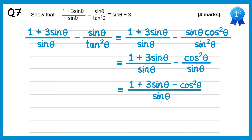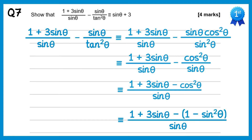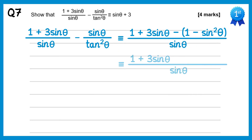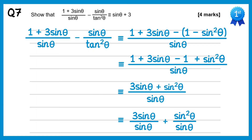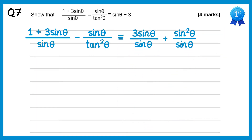Both denominators are now sinθ, so we combine into one fraction, then change cos²θ into 1 minus sin²θ. Expanding the bracket carefully (two negatives multiply to give positive sin²θ), we get 1 minus 1 = 0, so the 1's cancel. We then split into two fractions over sinθ: 3sinθ over sinθ plus sin²θ over sinθ. The first simplifies to 3, and sin²θ over sinθ is just sinθ. Writing these the other way round gives sinθ + 3, which is what we were asked to show.